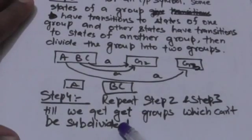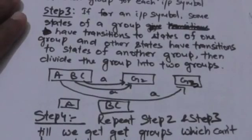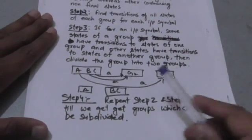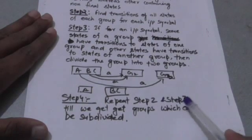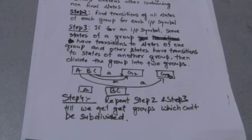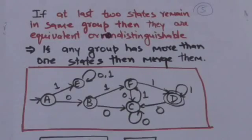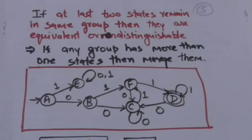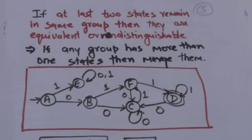Repeat steps 2 and 3 until we get groups which cannot be divided further. If at the end two states remain in the same group, they are equivalent or non-distinguishable. If any group has more than one state, we merge those states.